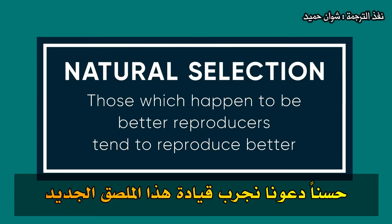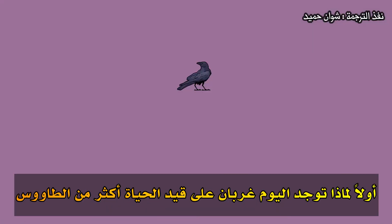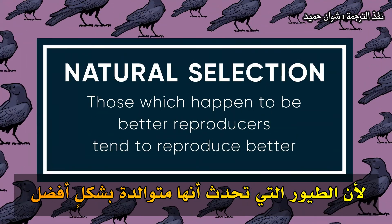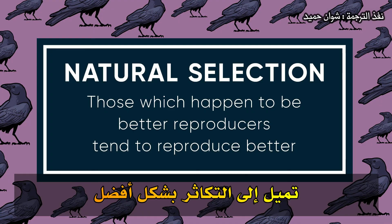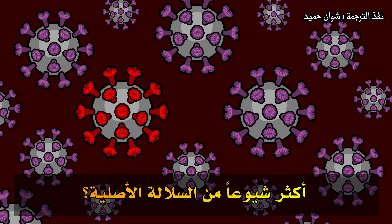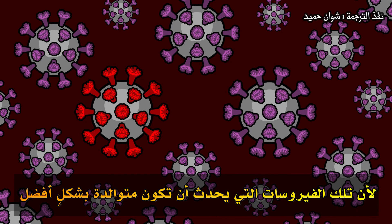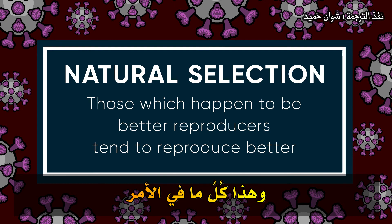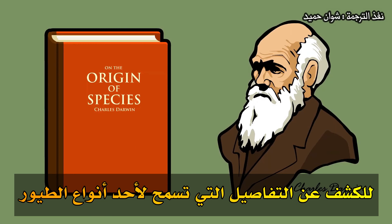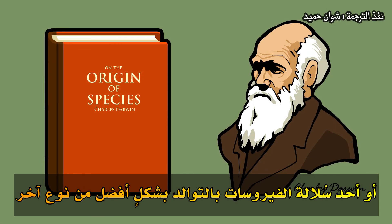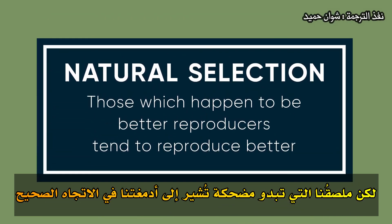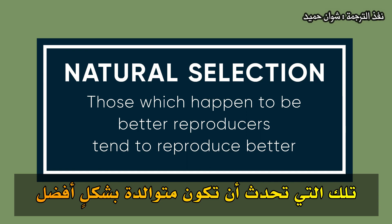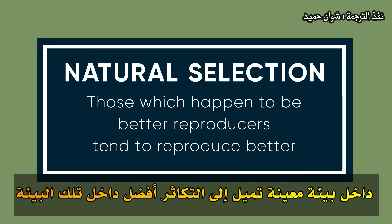Let us test drive this new bumper sticker with some real-world questions. First off, why are there more crows alive today than peacocks? Because those birds which happen to be better reproducers tend to reproduce better. Why is a new coronavirus strain becoming more common than the original coronavirus strain? Because again, those viruses which happen to be better reproducers tend to reproduce better. Obviously, it does require serious research to uncover the details allowing one bird species or one virus strain to reproduce better than another, but our seemingly silly bumper sticker does point our brains in the right direction. No fluff, no distractions: those which happen to be better reproducers within a specific environment tend to reproduce better within that environment.